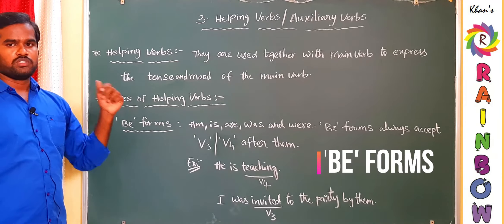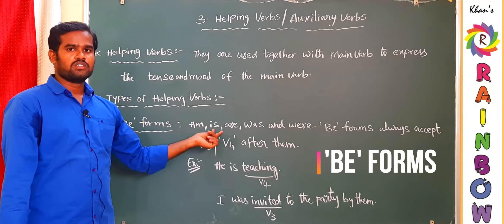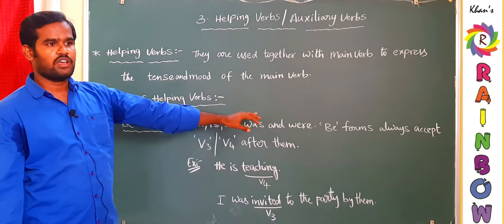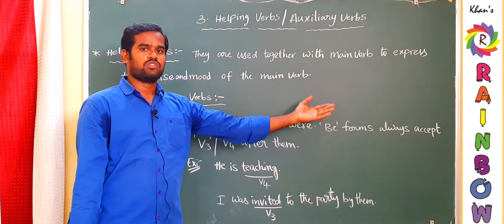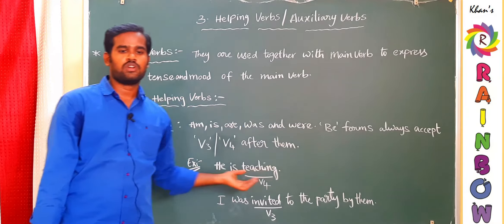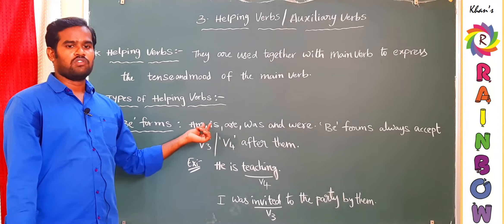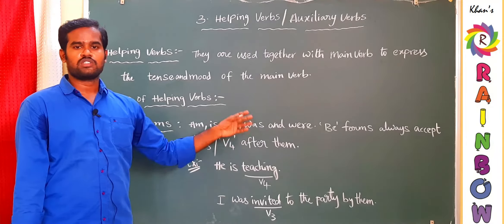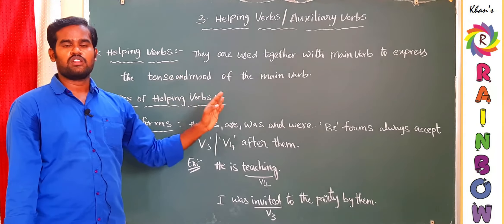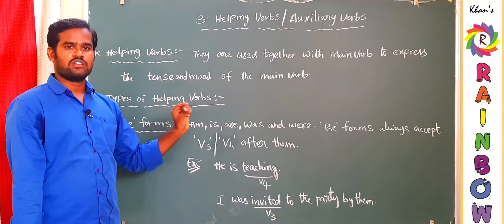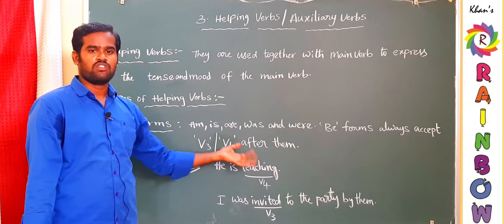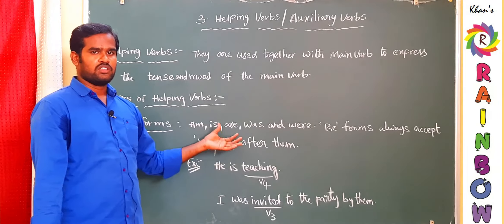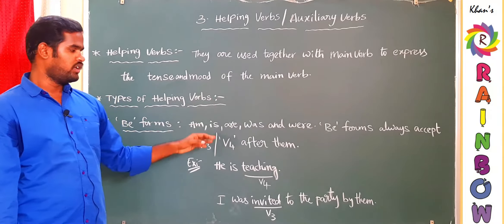The first type is B-forms. The B-forms are: am, is, are, was, and were. There is a rule for B-forms: B-forms always accept either V3 or V4 after them. Based on voice — if the sentence is active voice, you should use V4; if the sentence is passive voice, you should use V3. These are the fundamental rules for writing English statements.